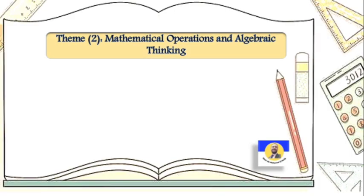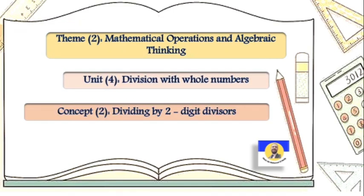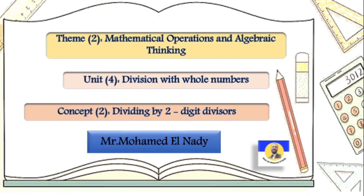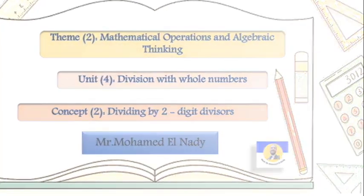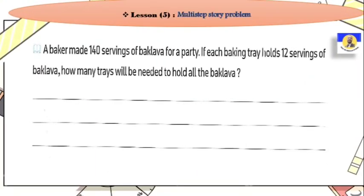As-salamu alaykum wa rahmatullahi wa barakatuh. Habibi, Talabatullah Primary 5. Ahlin wa sahlin biikum. Today, inshallah, I will complete Theme 2, Mathematical Operations and Algebraic Thinking, Unit 4, Division with Whole Numbers, Concept 2, Dividing by Two-Digit Divisors, Lesson 5, Multi-Step Story Problem.